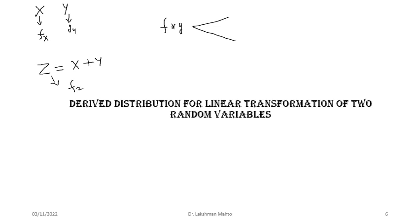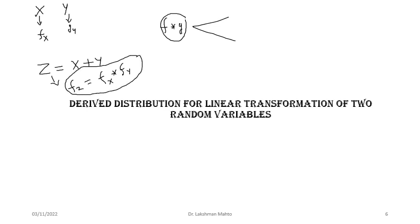I will discuss both the discrete version and the continuous version. If you are summing any two random variables, you can find the distribution of their sum using the convolution approach. Remember: convolution applies specifically in the case of linear transformation, and we will see how that works.